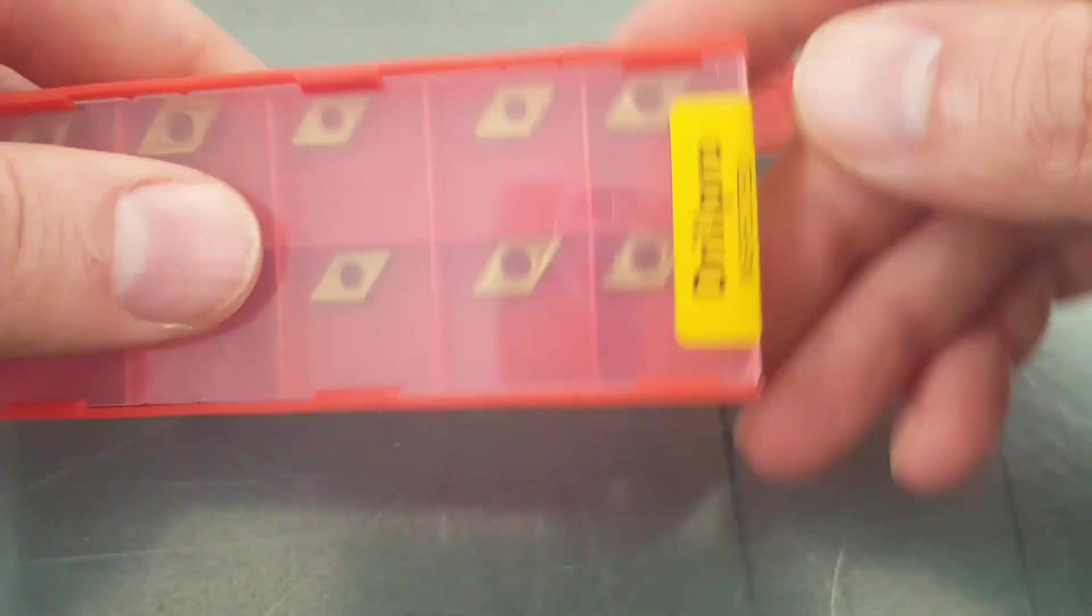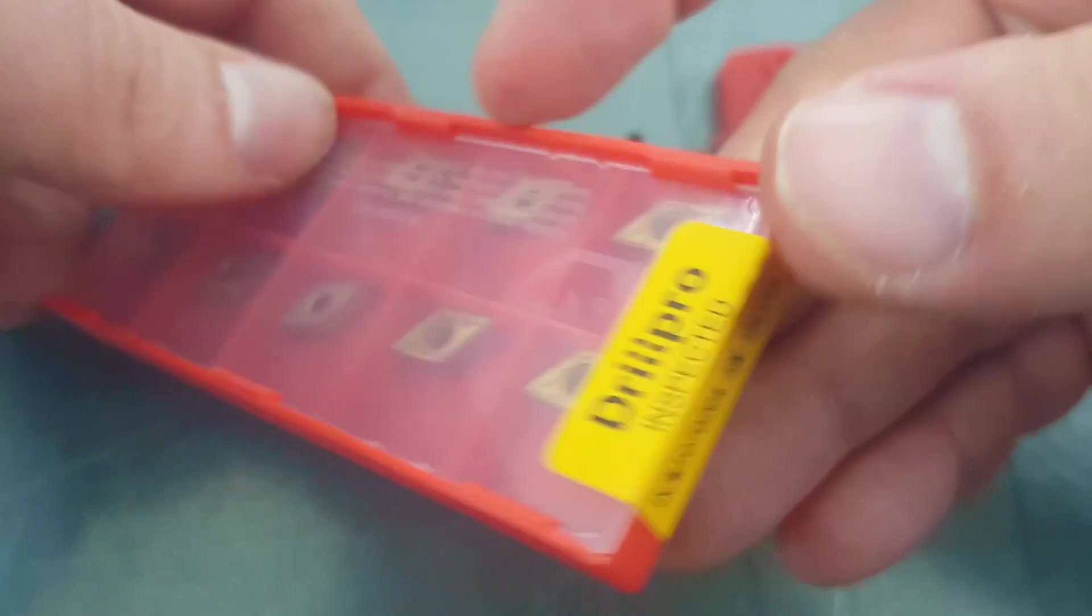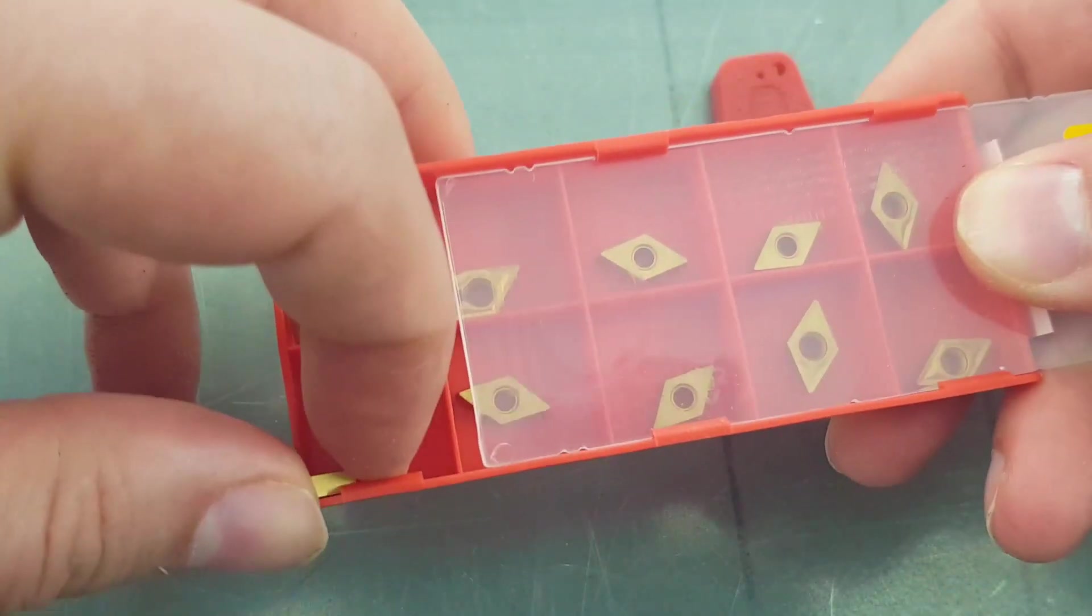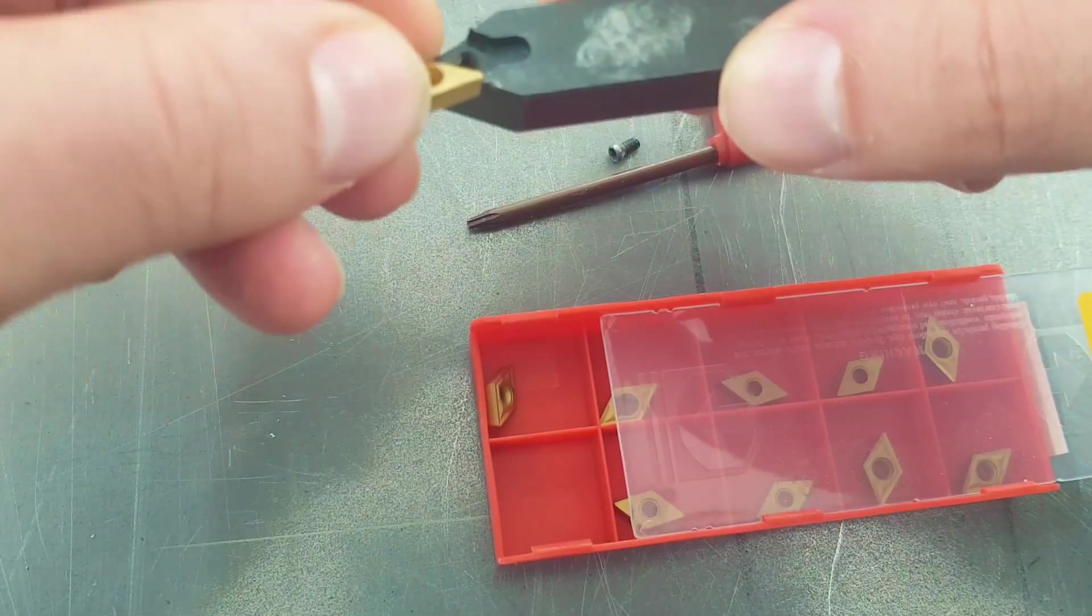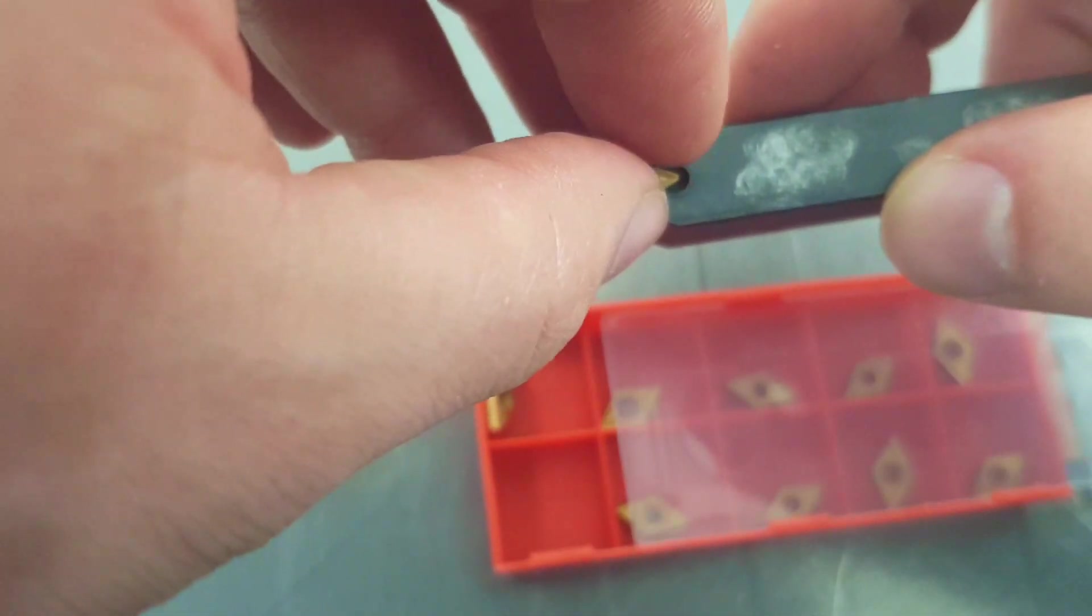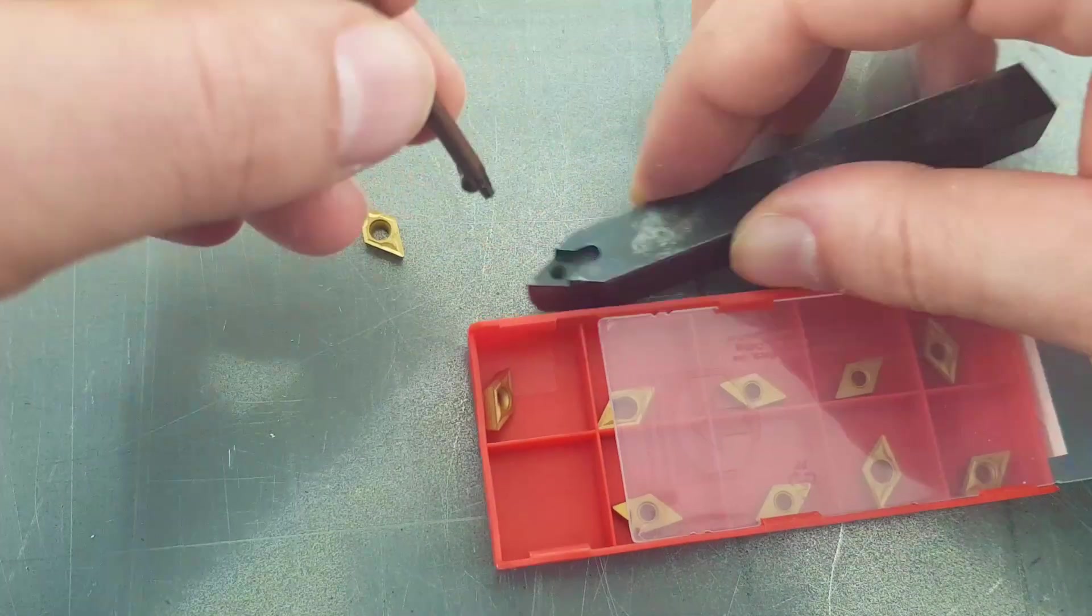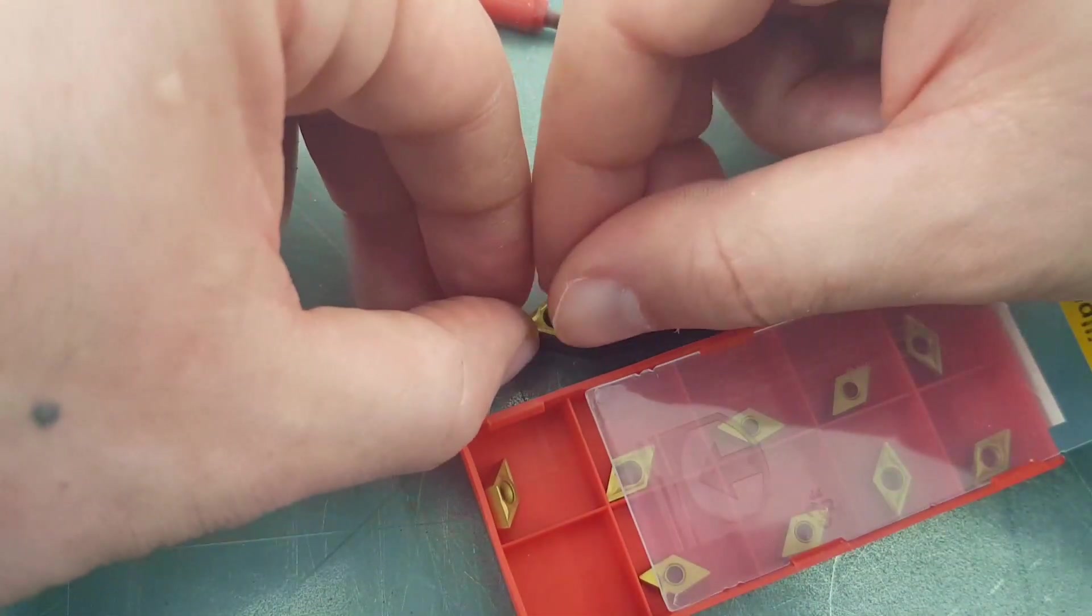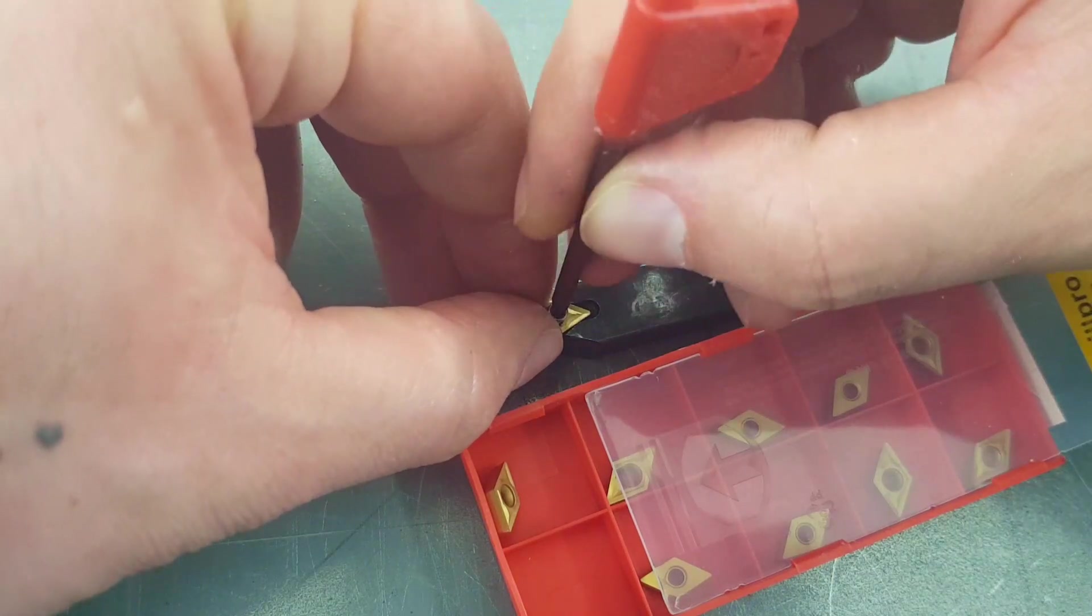So today I show you the carbide inserts of Drill Pro. They are quite cheap inserts that you can find on Banggood or Amazon, and I hear many things about them, especially for their low cost. For those who work at the lathe, this is a quite important point, and so I wanted to show you to which point they are able to turn and how well they perform.